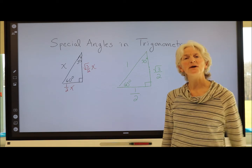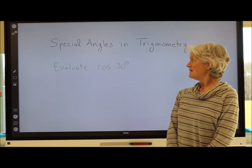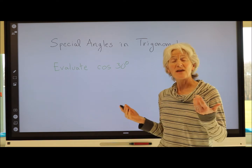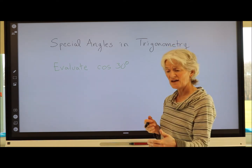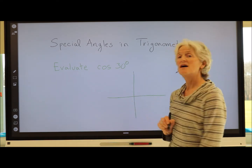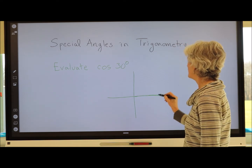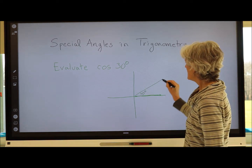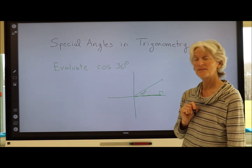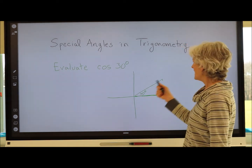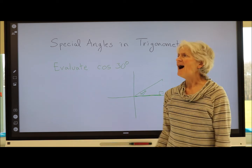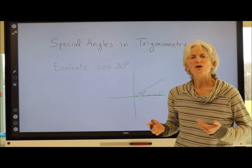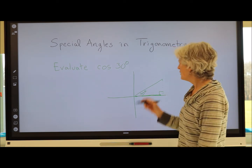How does this help us in trig? Let's evaluate the cosine of 30°. Cosine of an angle is the ratio of the adjacent side divided by the hypotenuse. On the coordinate plane, starting on the x-axis and rotating 30°, I drop down to make a reference triangle. I don't know the hypotenuse's actual length, but I know the ratio of sides in a 30-60-90 triangle is fixed — so let's call the hypotenuse 2.